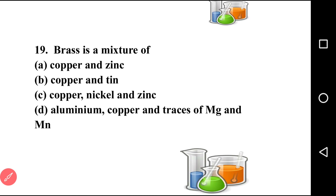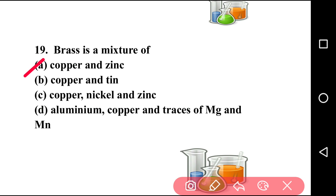Going to next question, question number nineteen: brass is a mixture of? Brass is an alloy — it contains copper and zinc. So brass generally contains copper and zinc. Question number nineteen, answer is A.